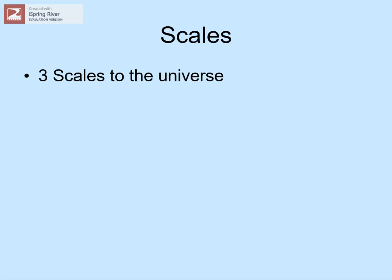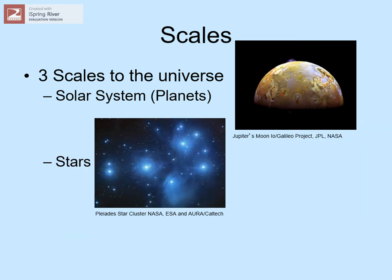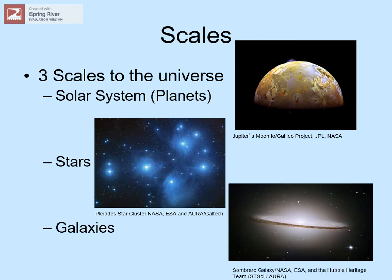If we want to understand the universe, it helps to look at it on three different size scales. The first one is the solar system size scale, our immediate neighborhood. This is what we'll be focusing on for most of the semester, but we'll start introducing the ideas here. The second one is the stellar scale, the stars and nebulae around us. Lastly, we've got the galactic scale, which extends on up to the universe as a whole.